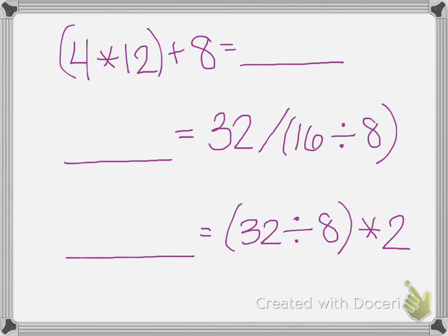Number two says solve. So again, we know when we have any type of grouping symbols like parentheses, we have to make sure we do those first. So 4 times 12 is 48, and then 48 plus 8 is 56.